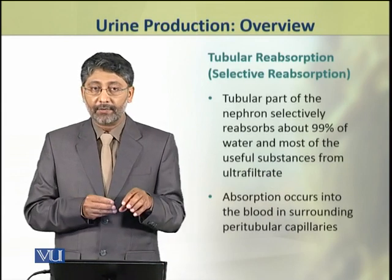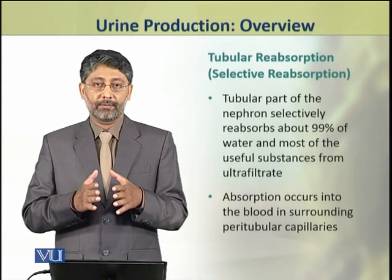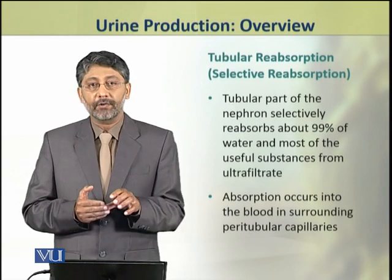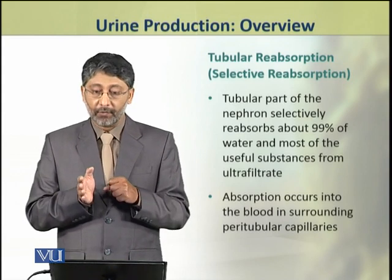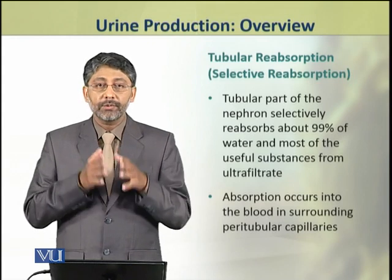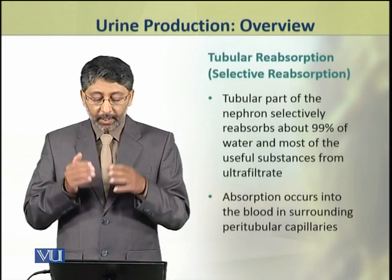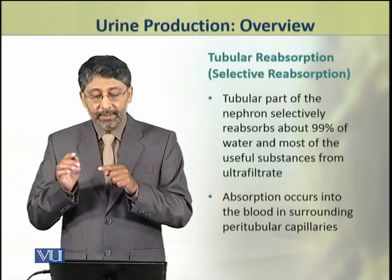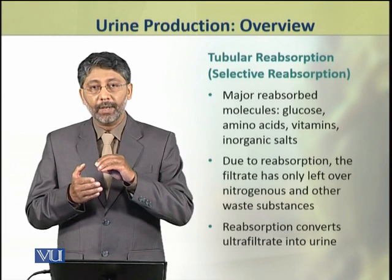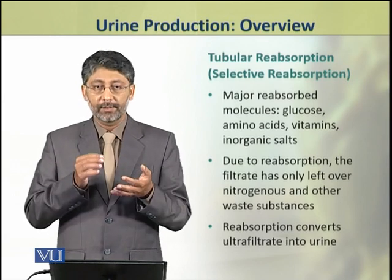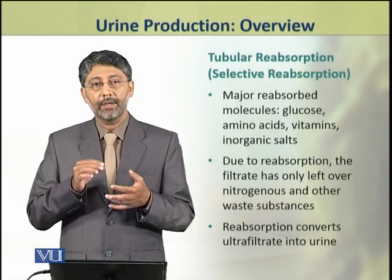The second step of urine formation is tubular reabsorption, or selective reabsorption. The tubular part of the nephron selectively reabsorbs about 99% of water and most of the useful substances from the ultrafiltrate. This absorption occurs into the blood by the surrounding peritubular capillaries. The major reabsorbed molecules are glucose, amino acids, vitamins, and various inorganic salts.